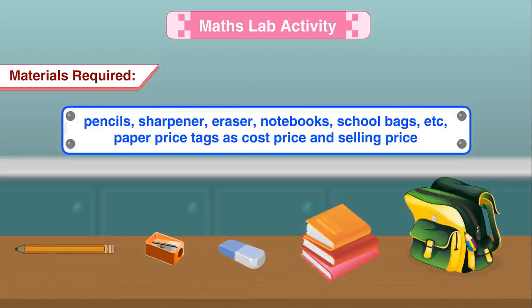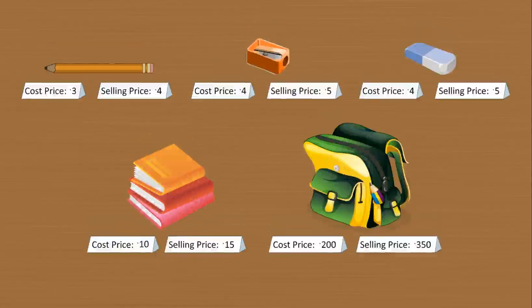Paper piece tags as cost price and selling price. Method: Make price tags of your choice. For example, 3 rupees cost price and 4 rupees selling price for a pencil. Put 2 tags on each item.